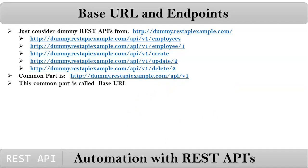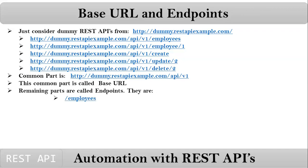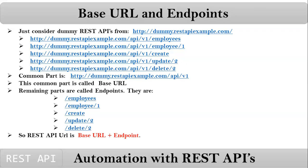If there is a website and for that website there are some REST APIs, there is a common part for all of them. That common part is called the Base URL. After the common part, the remaining values are called Endpoints. So, a REST API URL is nothing but Base URL plus Endpoint — that is the important point.